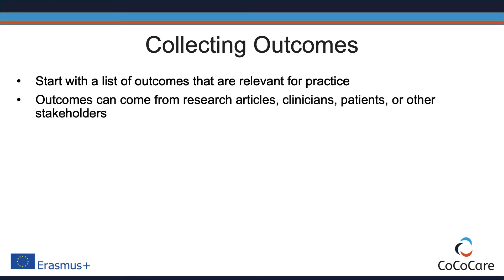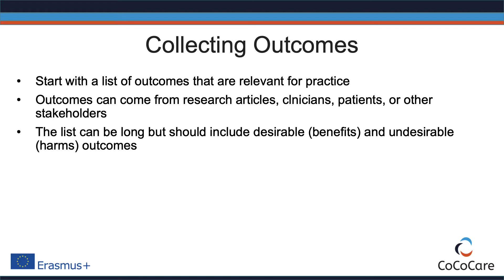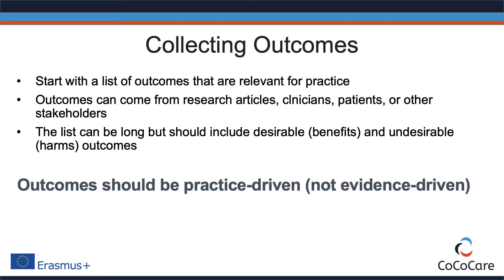Outcomes can come from research articles, clinicians, patients, or stakeholders. The list can be long, but it should include outcomes that reflect benefits and harms of interventions. An important point to consider is that outcomes should be practice-driven, not evidence-driven, which means that any outcome relevant for practice should be included, even if experts suspect that little or no research evidence is available for those outcomes.